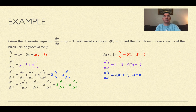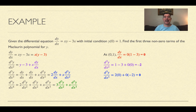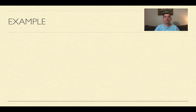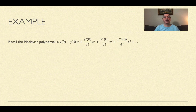Then plugging into the third derivative — remember, I'm plugging in not just x and y, but also dy/dx and d²y/dx², everything I now know into the current derivative. Doing that for the third derivative gives zero. And doing that for the fourth derivative gives negative six. I think that's as far as I need to go because now I have three non-zero terms.